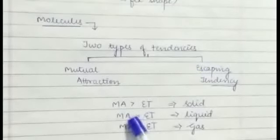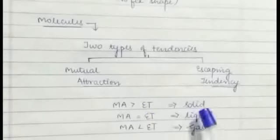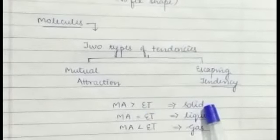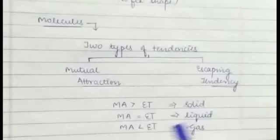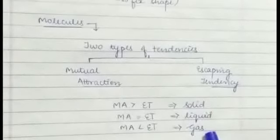Solid ki case mein mutual attraction escaping tendency se zhaadha hoga. Agar donno equal hain toh woh liquid ka case ho jayega. And agar mutual attraction hamaari kam hai escaping tendency se toh ye hamaari gas ka case ho jayega.